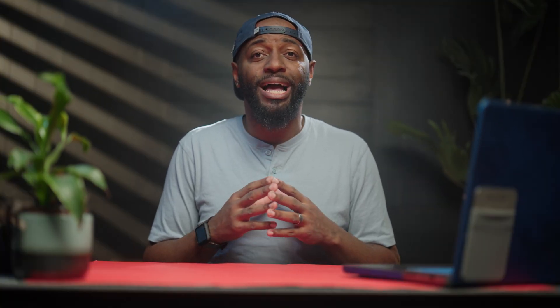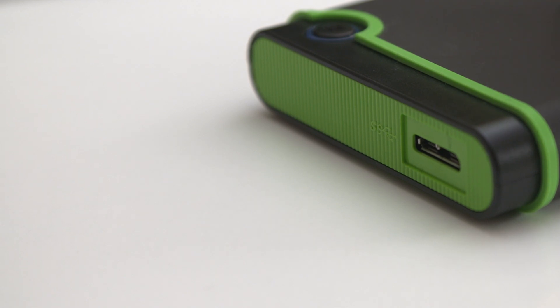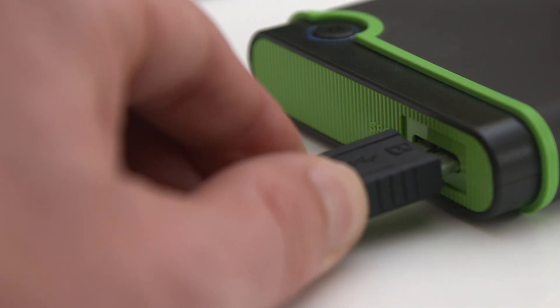To give you an example, I can edit on my desktop PC over ethernet while my wife is uploading footage to the NAS from her MacBook Pro over WiFi, and we can do this all at the same time. That's something that's not possible with external USB hard drives — they can only be connected to one device at a time.